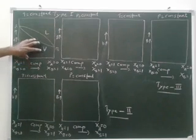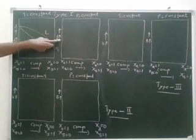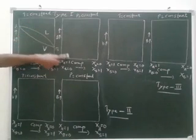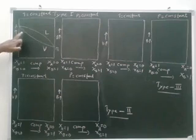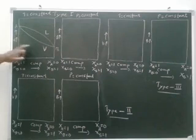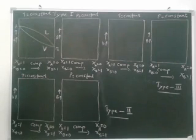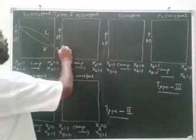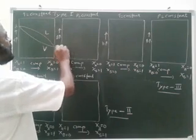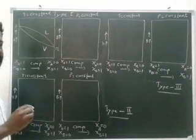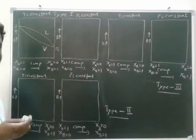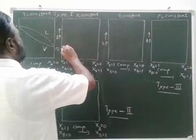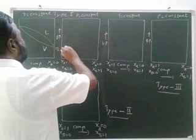Now we can plot the graph of the boiling point composition diagram from the vapor pressure composition diagram. In the vapor pressure composition diagram, A has high vapor pressure, so its boiling point will be low. B has low vapor pressure, so its boiling point will be high. The nature of the graph will reflect this inverse relationship.